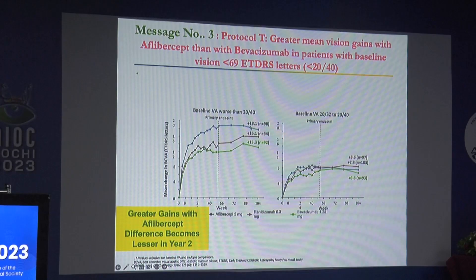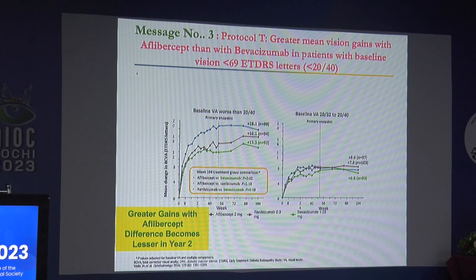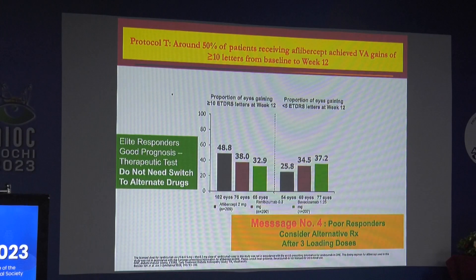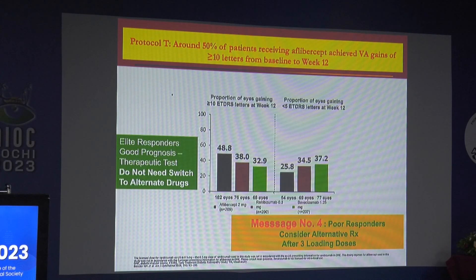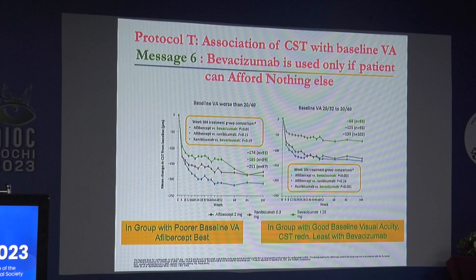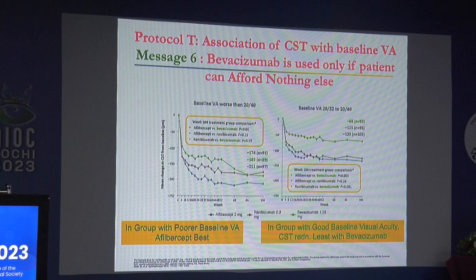Patients who have better vision than 20/40 can use any agent. If the patient cannot afford anything, Avastin is still a good option — you should not allow the patient to go without any injections. Patients who have a good prognosis are those who respond within the first two or three injections; many times they may not even need a third or fourth injection. Therefore, you must try the initial loading doses. Those who do not need injection at month 3 and month 4 are generally better responders.